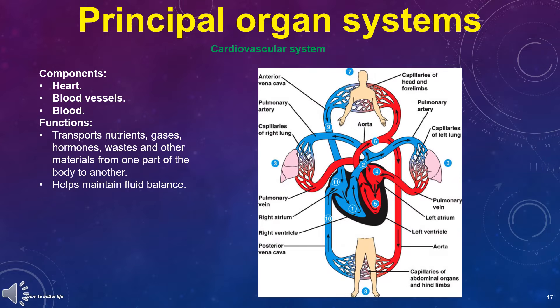The cardiovascular system components are the heart, blood vessels, and blood. Its functions are: transports nutrients, gases, hormones, wastes, and other materials from one part of the body to another; and helps maintain fluid balance.